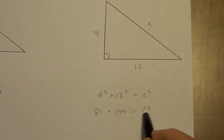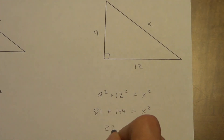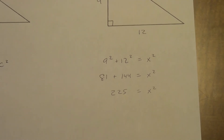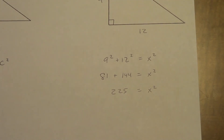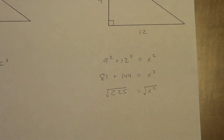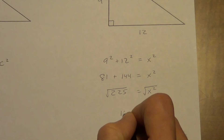81 plus 144 equals X squared. A lot of you like to write the number 225 over here and then X squared disappears — we don't want that to disappear. Just add down, keeping the equal sign lined up and things neat. So 225 equals X squared. To get rid of the squared, we take the square root of both sides. The square root of X squared is X, so X equals 15.